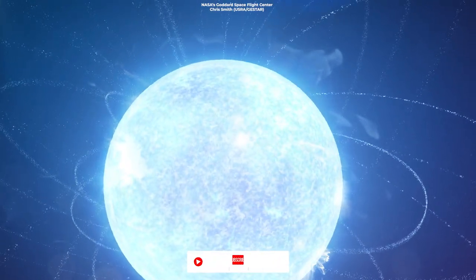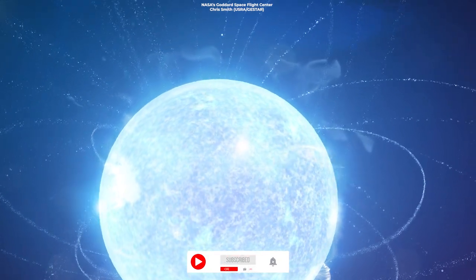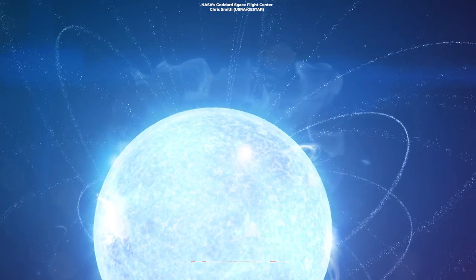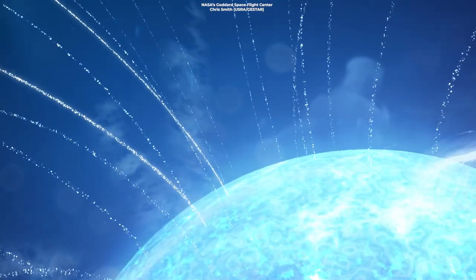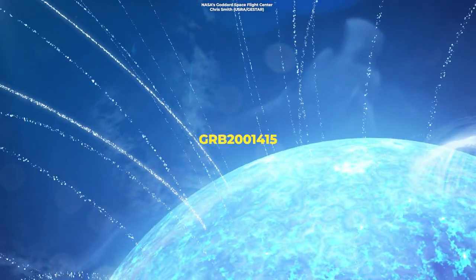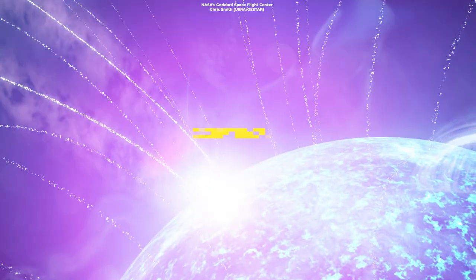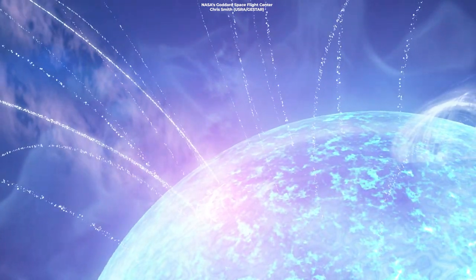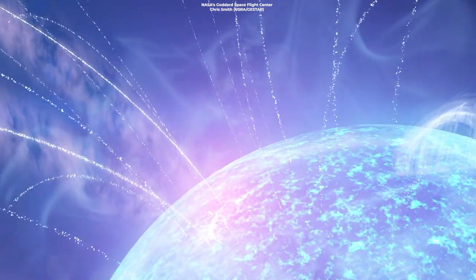For the first time an international group of scientists was able to measure oscillations in the brightness of a magnetar during its most violent moments. The magnetar known as GRB-2001-415 released energy equivalent to that produced by the Sun in 100,000 years in less than a tenth of a second.